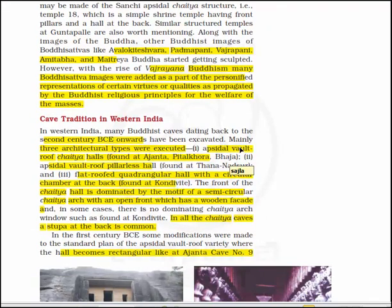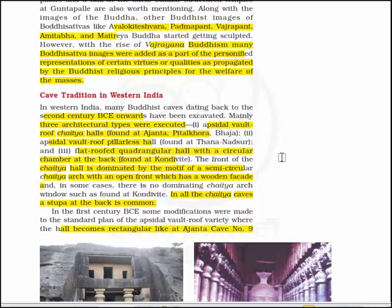Now let's read about the cave traditions in Western India. In Western India, many Buddhist caves dating back to the 2nd century BCE onwards have been excavated. Mainly three architectural types were executed: apsidal vault roof chaitya halls (found at Ajanta, Pithalkhora, Bhaja), apsidal vault roof pillarless halls (found at Thana-Nathsari), and flat-roof quadrangular hall with a circular chamber at the back (found at Kondivite).